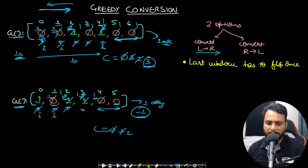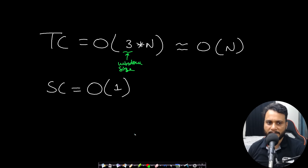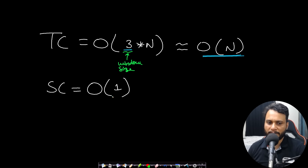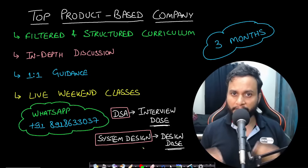The greedy conversion is clear. We parse the entire array exactly once, and within each window we revisit three items, giving a time complexity of O(n). Space complexity is O(1) since we use no extra space. Let's now look at the code.